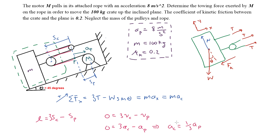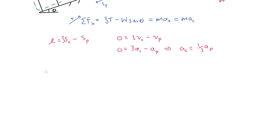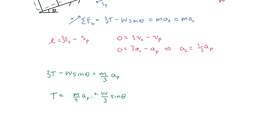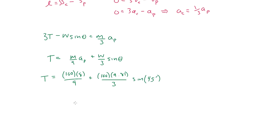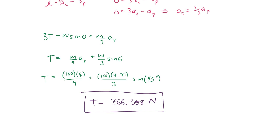This value can now be plugged into our Newton's second law equation to solve for T, the towing force. The towing force equals M over 9 times AP plus W over 3 times sine of theta. Plugging in the values, the towing force equals 366.358 newtons. That is the towing force of the motor onto the crate.